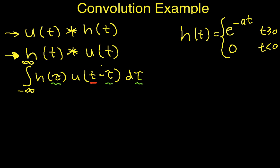We're going to get the area under a plot of h of tau times u of t minus tau. This is actually more easily understood if we do it visually, or at least set it up visually. The idea is that this convolution gives us a function of t: for each value of t, we set that value here, compute the product h of tau times u of t minus tau, integrate with respect to tau, and see what we get.